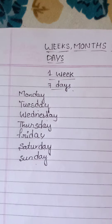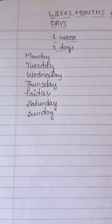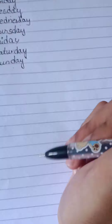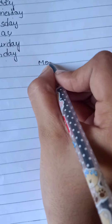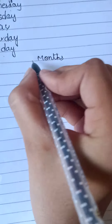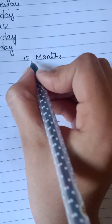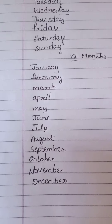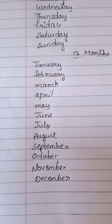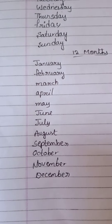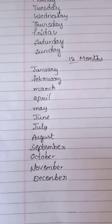Next, months. How many months are there? 12 months. What are they? January, February, March, April, May, June, July, August, September, October, November, December. There are 12 months.